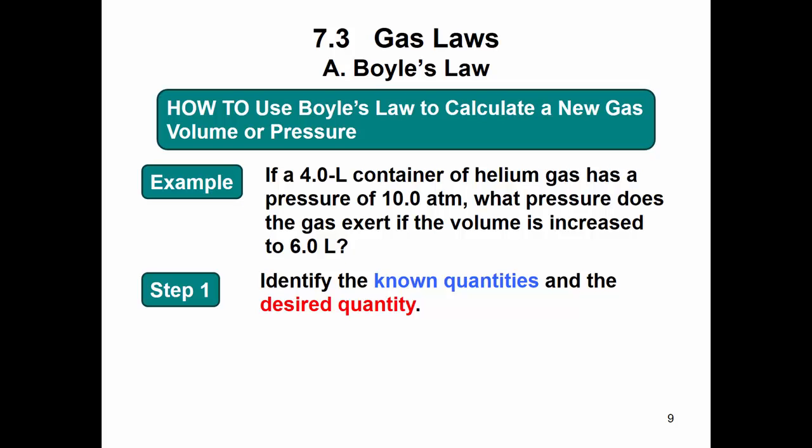So you first just identify what you know here. So we have your four liters, so you have your V1, that's your initial, and you have your P1. We're looking for P2, your final pressure. And the volume is increased, so that's your V2.